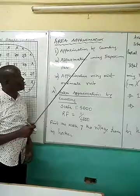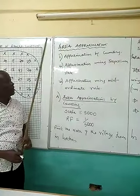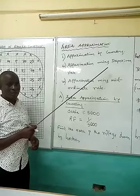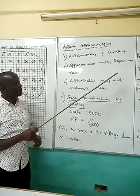1. Approximation of area by counting. Now 2. Approximation of area using the trapezoidal rule which in short I can call the trapezium rule.